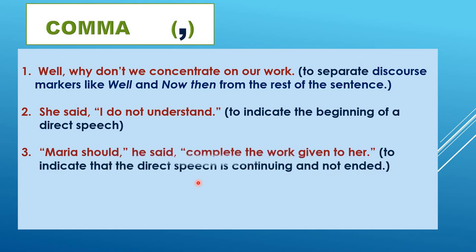In the next direct speech example: 'Maria should, he said, complete the work given to her.' Notice where the comma is — the sentence has not completed, so you put a comma to show it is still continuing. 'Maria should, he said, complete the work given to her.' This shows how important it is to understand the placement of the comma.